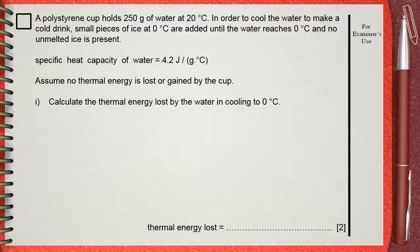A polystyrene cup holds 250 grams of water at 20 degrees Celsius. In order to cool the water to make a cold drink, small pieces of ice at 0 degrees Celsius are added until the water reaches 0 degrees Celsius and no unmelted ice is present. The specific heat capacity of water is 4.2 joules per gram dot degree Celsius. Assuming no thermal energy is lost or gained by the cup, calculate the thermal energy lost by the water in cooling it to zero.